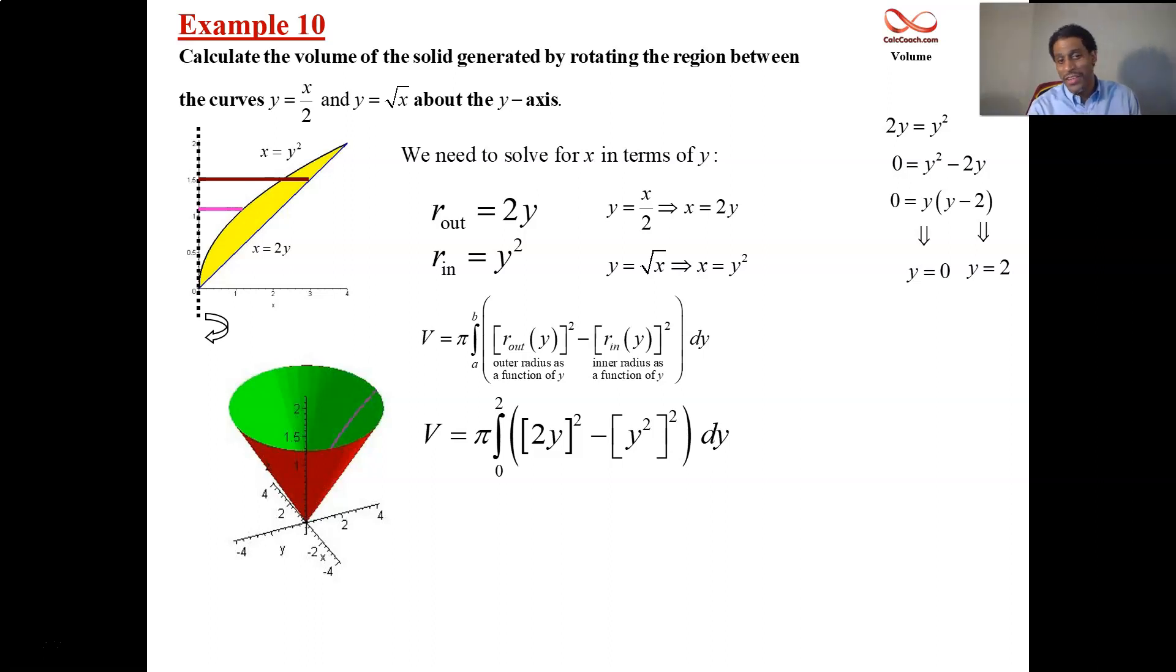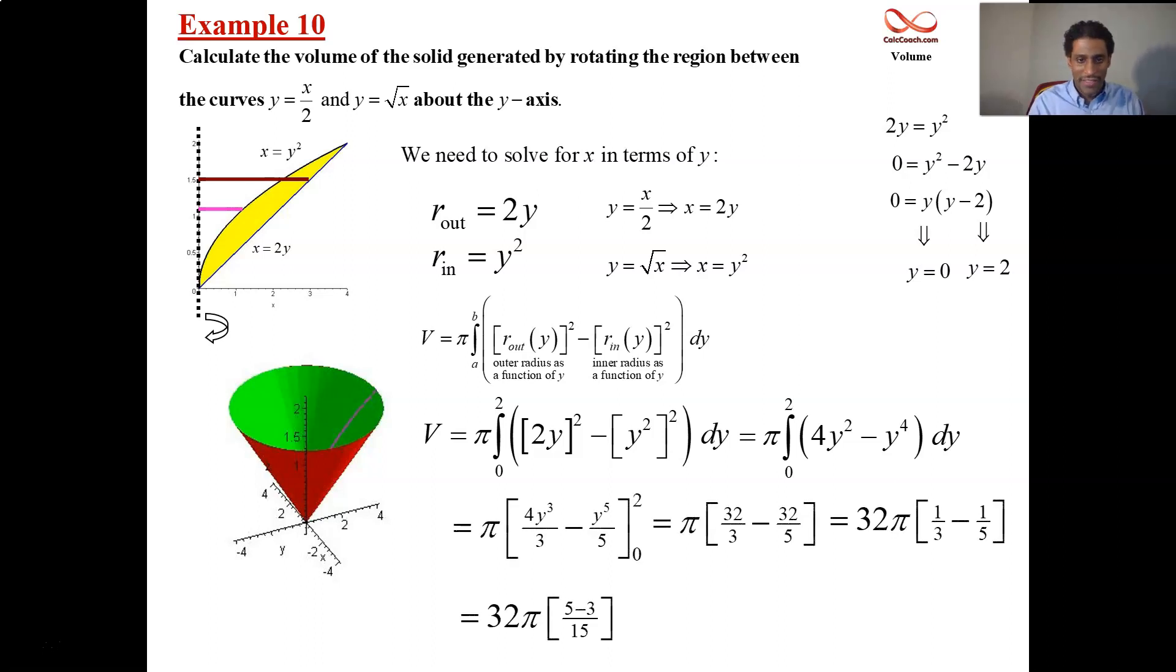2y quantity squared is 4y squared. Y squared quantity squared is just y to the fourth. So we have a nice simple integral. Work it out and you'll find out that the answer is 64 pi over 15. If you need help with the intermediate part, just go ahead and look at the steps that I put in there.